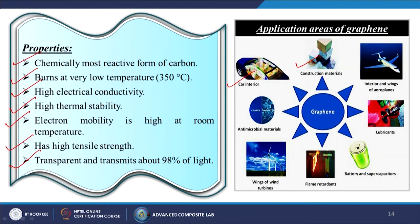Properties of graphene: chemically most reactive form of carbon, burns at very low temperature (~350°C), high electrical conductivity, high thermal stability, high electron mobility at room temperature, high tensile strength, and transparent (transmits about 98% of light). Application areas include automobile industry, construction materials, aerospace, lubricants, battery/supercapacitor/energy storage, flame retardant materials, turbines, and biomedical applications such as antimicrobial materials, scaffolds, and orthopedic implants.